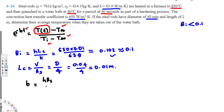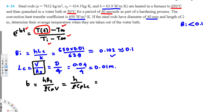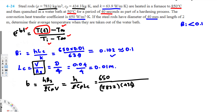To find b, we use the equation: b = h·As / (ρ·cp·V). Here h is the heat transfer coefficient, As is surface area, ρ is density, cp is specific heat, and V is volume. Since V/As = Lc, we can rewrite this as b = h / (ρ·cp·Lc). Plugging in: b = 650 / (7832 × 434 × 0.01).